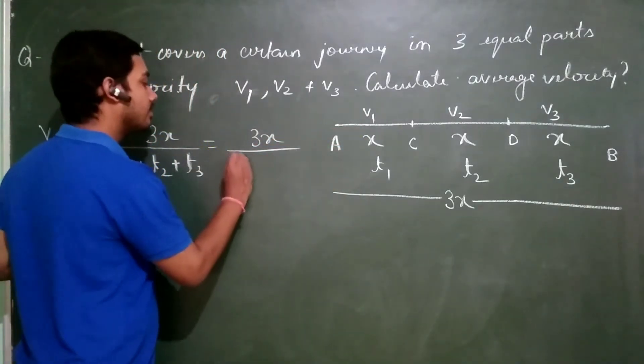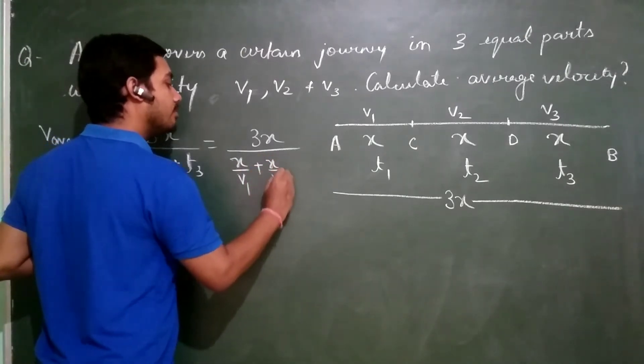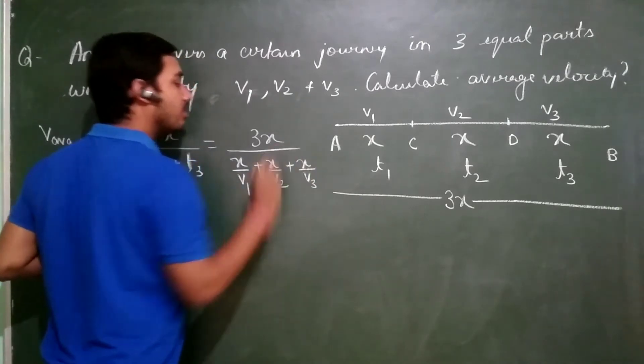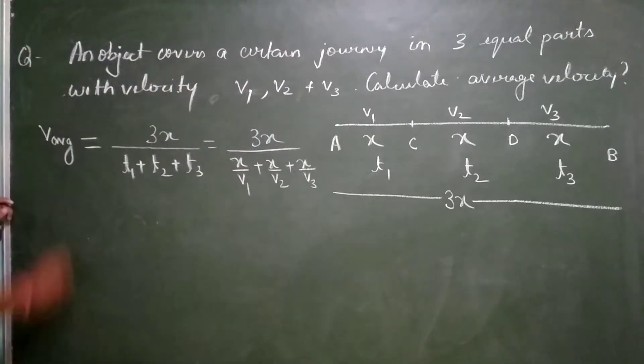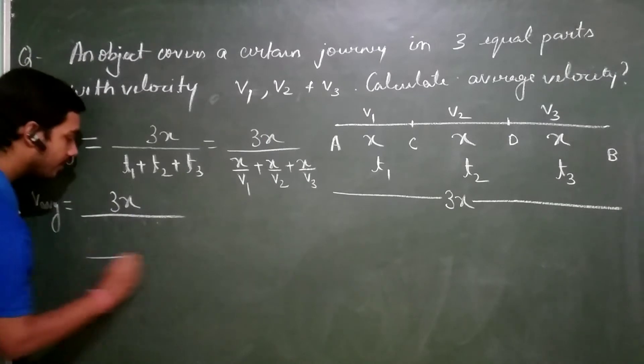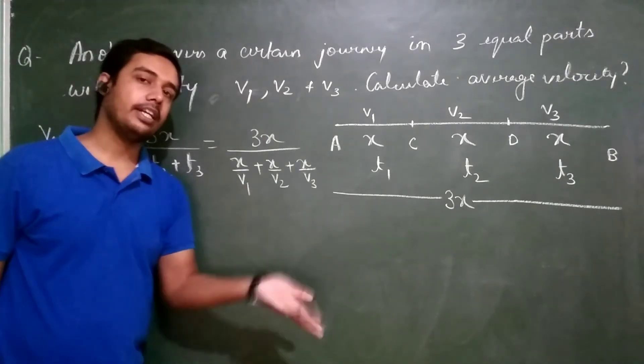Distance is x by V1. T2 will be x by V2. T3 will be x by V3. Take the LCM, V average is equal to 3x divided by, I have told you when all are variables and all are different, multiply them.